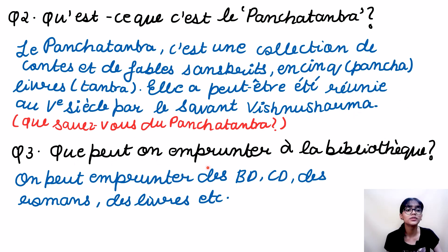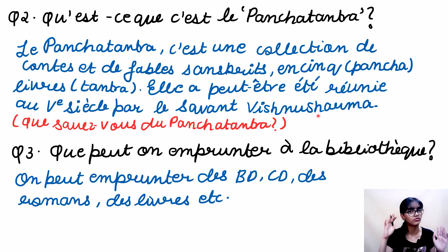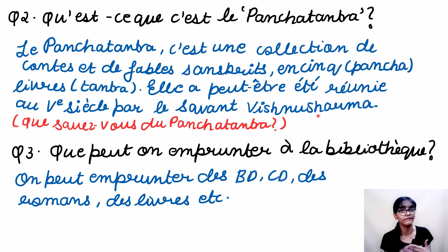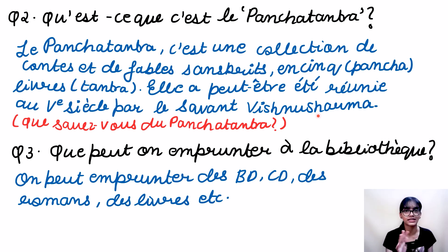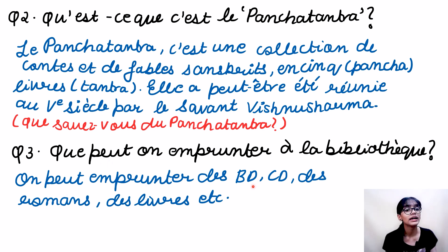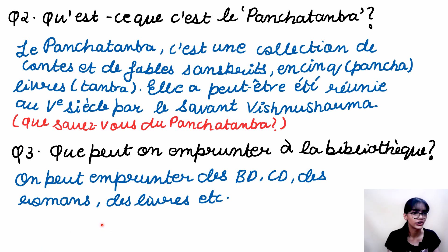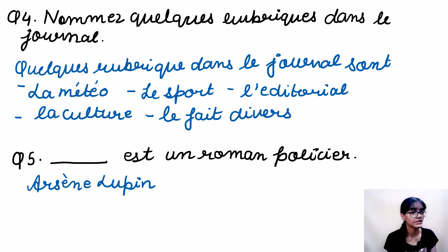The third question is: What can we borrow from the library? In your chapter, there's a page where everything available in the library is listed — books, CDs, comic books, magazines, etc. A whole list is given there. From that, you can write a few items. You can add more or write whichever ones you want. These are just a few examples.